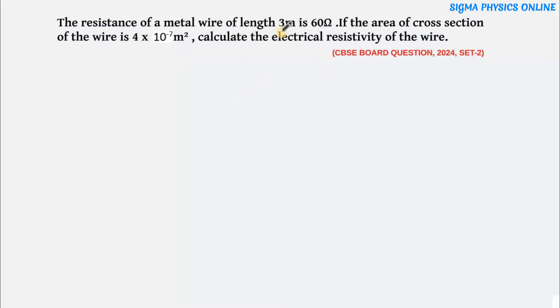Alright, so here we have been given a metal wire whose length is given and its resistance is given. The area of cross section of the wire is also given. We need to find out the electrical resistivity of the wire.